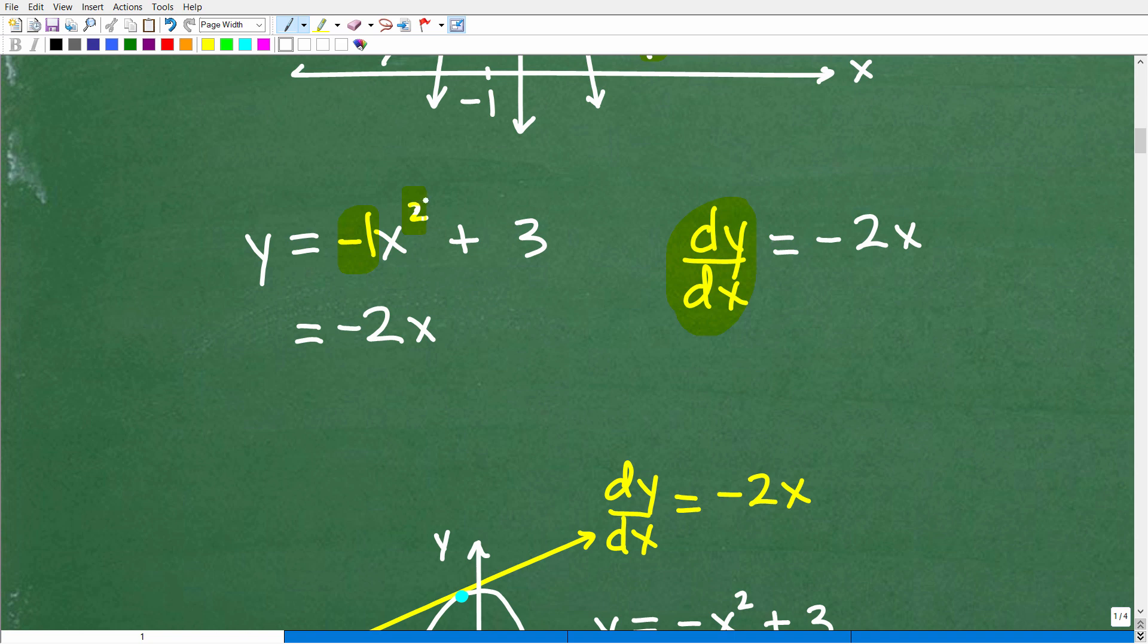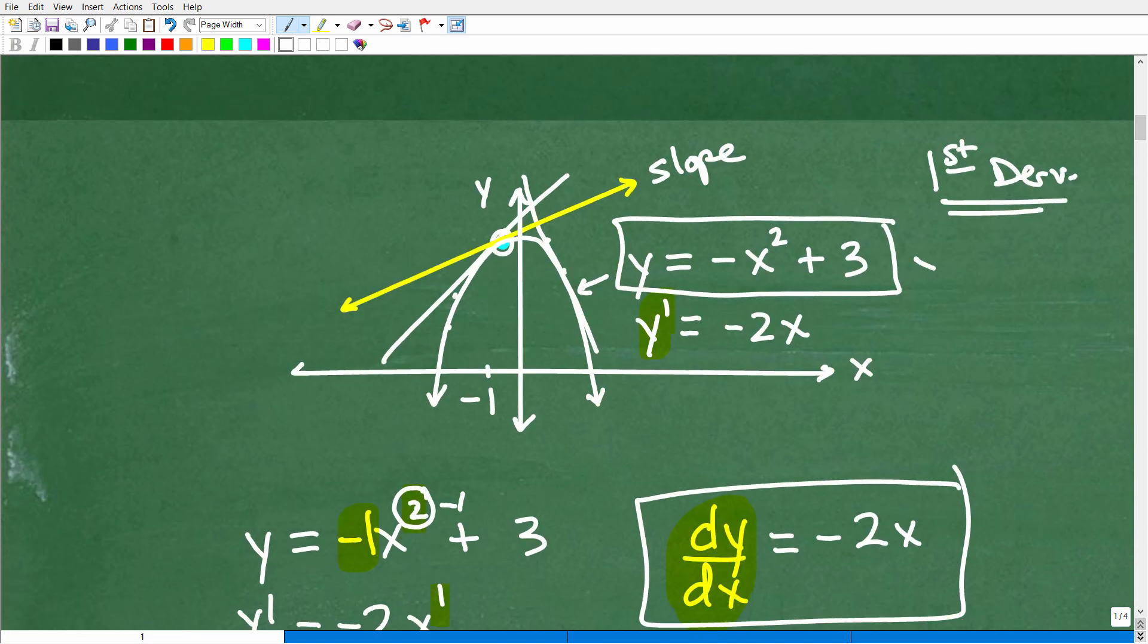So you're going to go that little 2 times that negative 1. That's negative 2. We write the x and then this is 2. What we're going to do right here is take this 2 and subtract 1. You always subtract 1. So 2 minus 1 is 1. And there you go. So it's negative 2x to the first or just negative 2x. That is y prime or dy/dx.